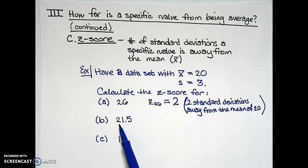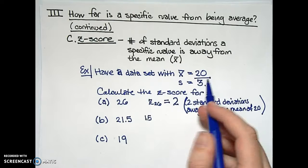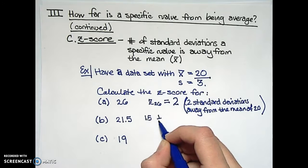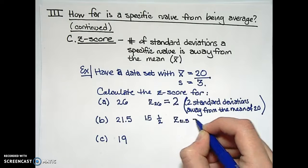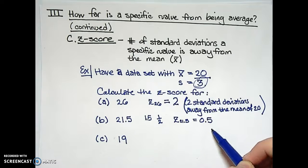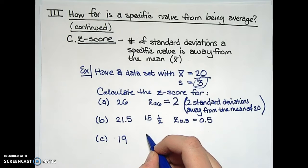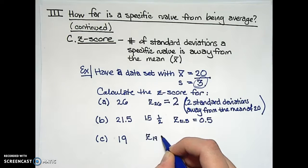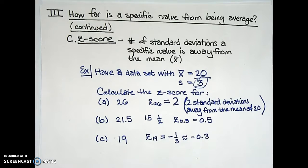For the second value of 21.5, note that this is 1.5 units above my mean of 20, so that is exactly one-half of a standard deviation away. So we anticipate that z₂₁.₅ equals one-half. For 19, which is one unit less than my average of 20, z₁₉ is negative one-third, or approximately negative 0.33 standard deviations below the mean of 20.